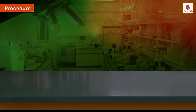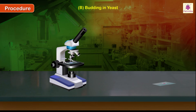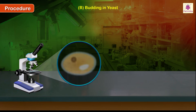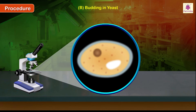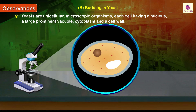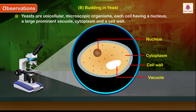Procedure for budding in yeast: replace the slide with another one of budding in yeast. Observe the slide first under low magnification and then under high magnification. Observations: yeasts are unicellular microscopic organisms, each cell having a nucleus, a large prominent vacuole, cytoplasm, and a cell membrane.